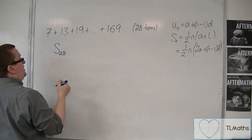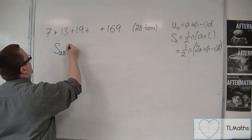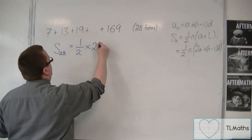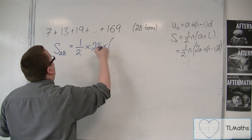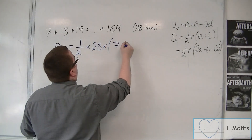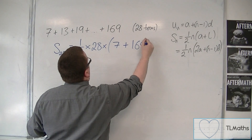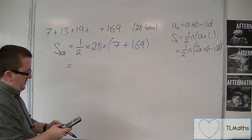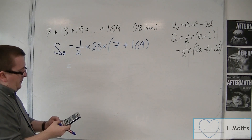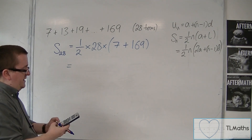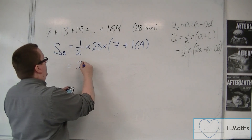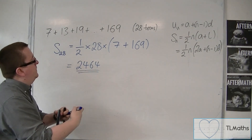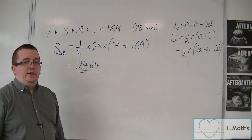The sum of the first 28 terms is equal to one half times n, which is 28, times by a, which is 7, plus L, which is 169. So we have one half times 28 times (7 plus 169), and that's 2,464. And that's how we can use that first formula.